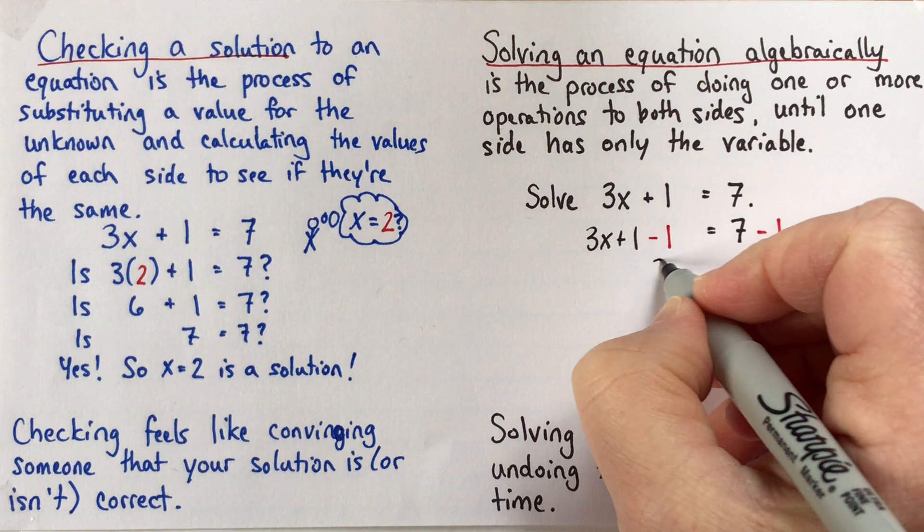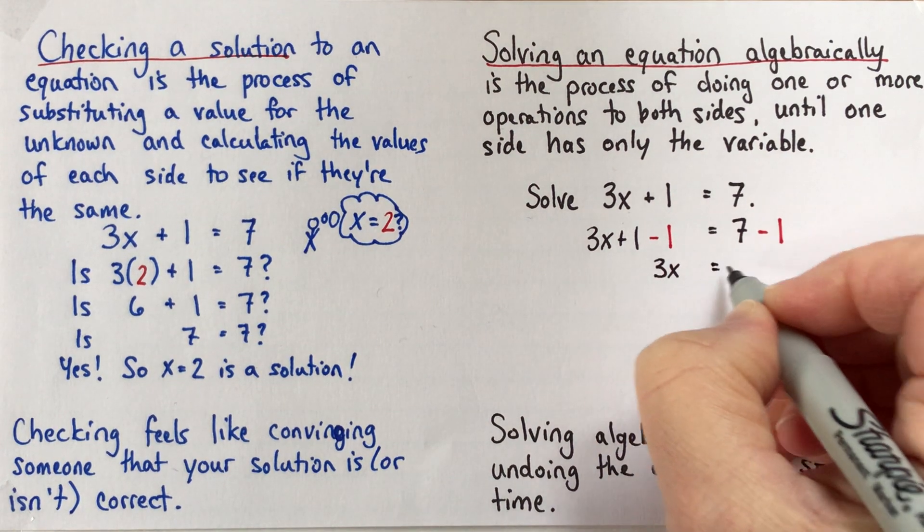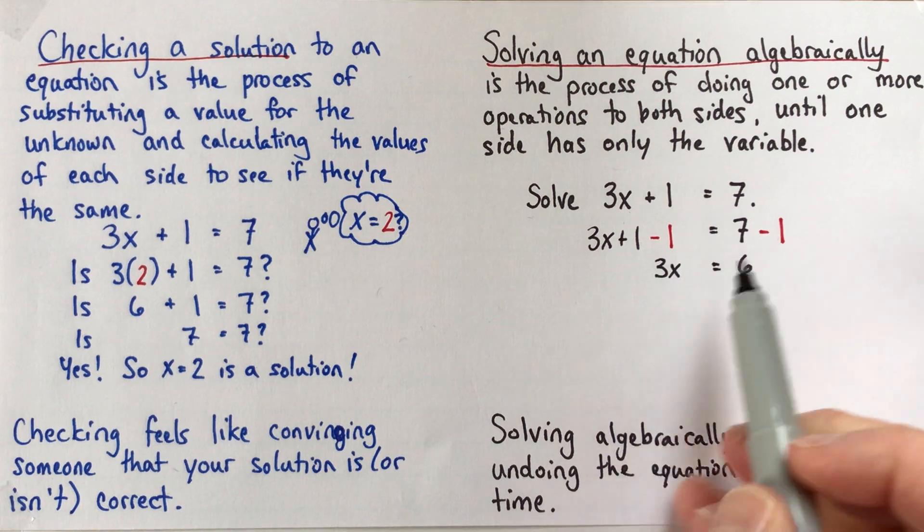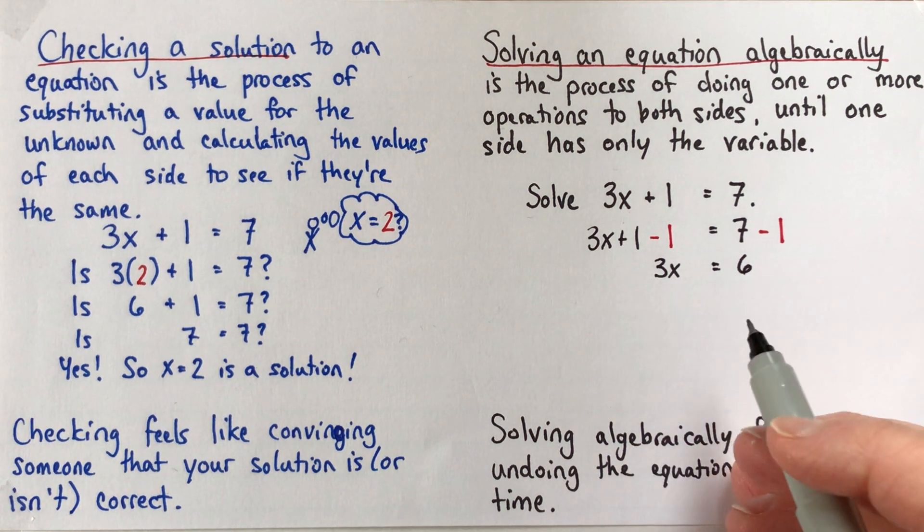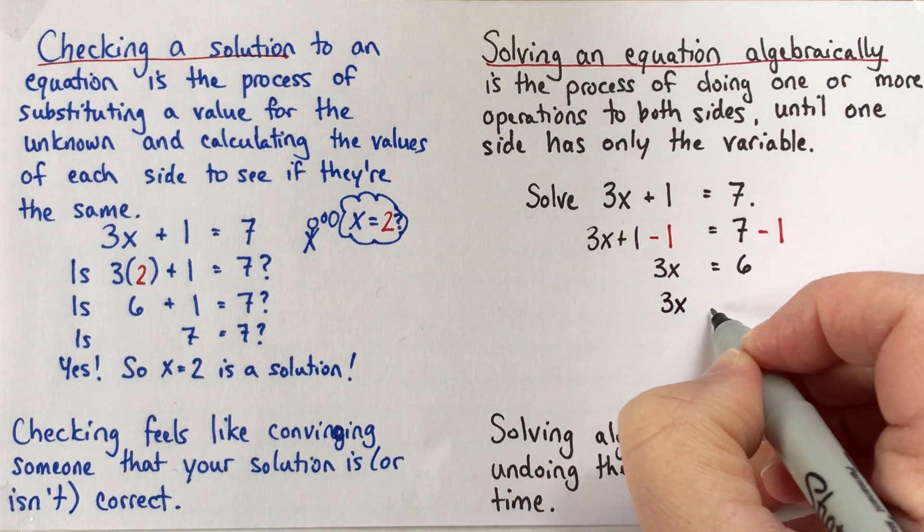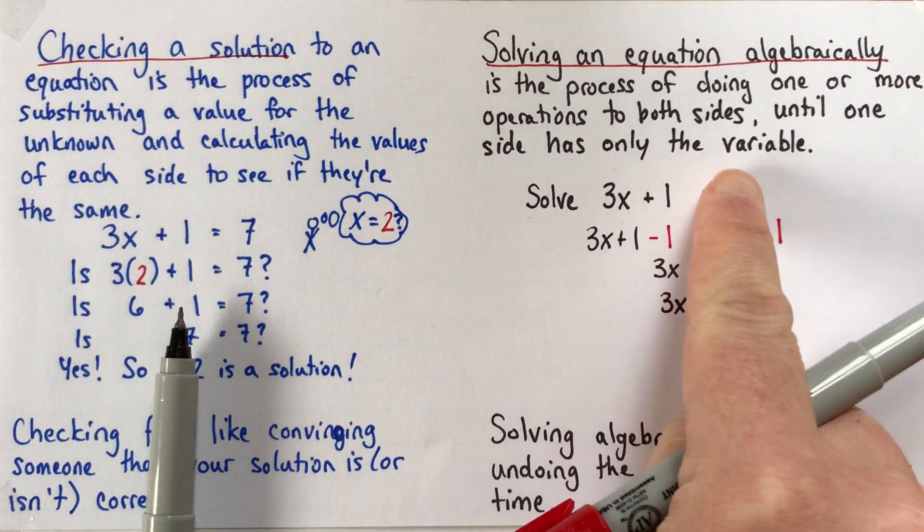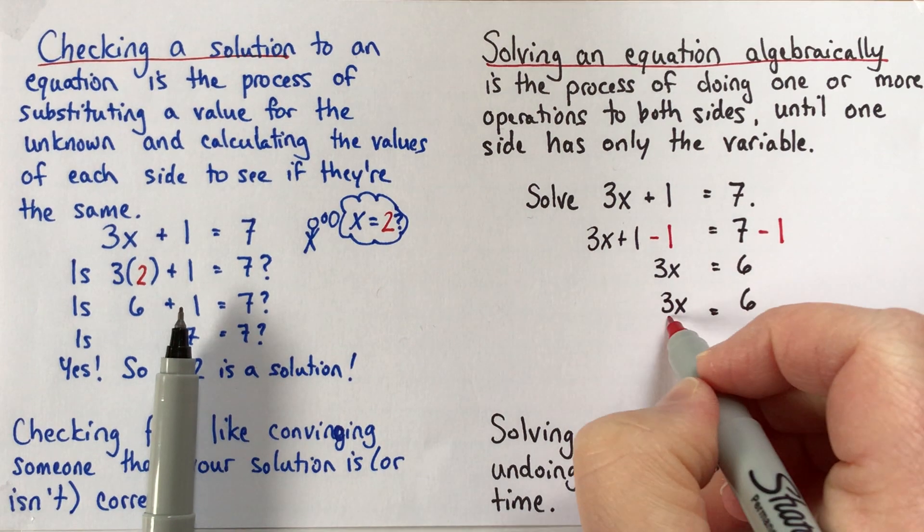And then next, I'll just write what we have left. So 3x plus 1 minus 1 is 3x, and 7 take away 1 is 6. And then we're going to do another operation to both sides. And I just would like to have only the variable over here. So I'm going to divide both sides by 3.